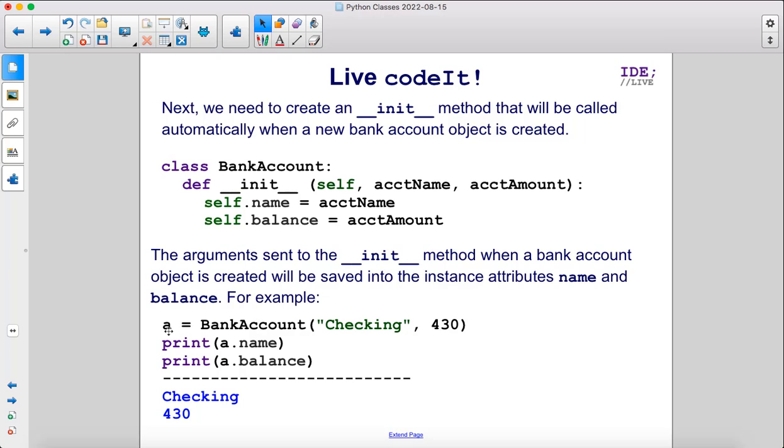For example, if we start a new bank account called A, that's our instance of our bank account class, and we send the arguments checking and 430, then the name of our account will be checking and the balance will be 430.